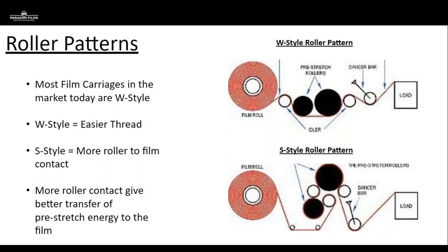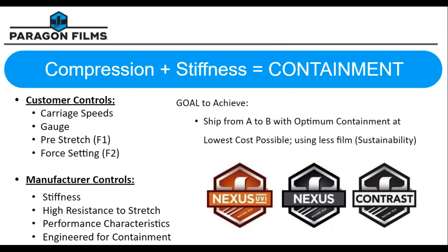Roller contact is critical for maintaining on-pallet stretch. If the rollers are in bad shape or pinch bars aren't there, you'll have slippage, losing on-pallet stretch and impacting containment. F1 inside the carriage isn't something the customer can control from the control panel — it may require a service technician if there are roller issues.